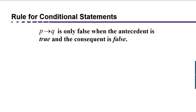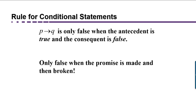In the previous video, we learned the rule for telling when a conditional statement is true or false. The rule is that P implies Q is only false when the antecedent, the P part, is true and the consequent, the Q, is false. I like to think of it as it's only false when the promise is made and then broken.